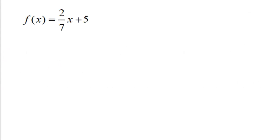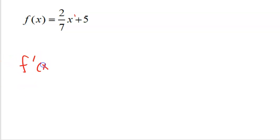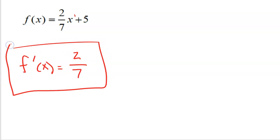Here's an example. We're given a linear function — I know this is linear because it has degree one. This is a line with a slope of two-sevenths. Because it's linear, that rate of change will never be anything other than two-sevenths, no matter what x value you look at. So f prime of x — a formula to tell you the rate of change at any given x — will always be the constant two-sevenths. Zero work needs to be done. That's how easy linear functions are.